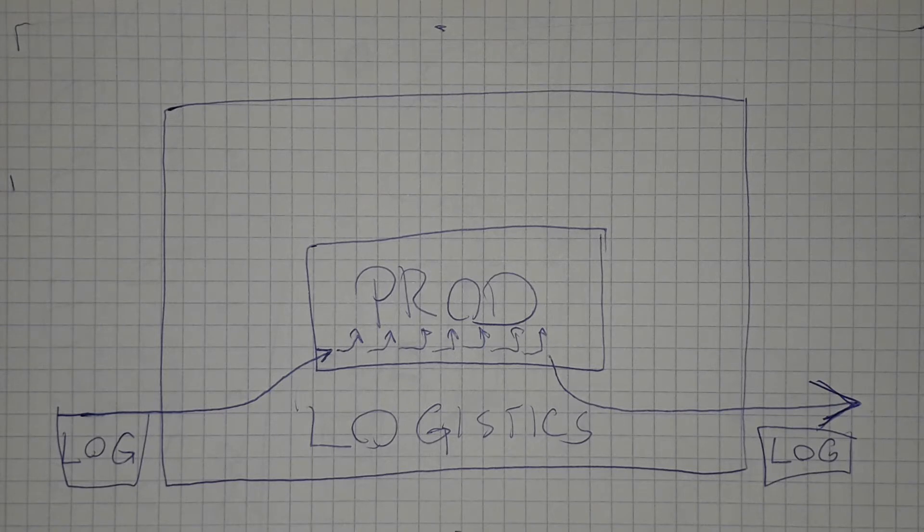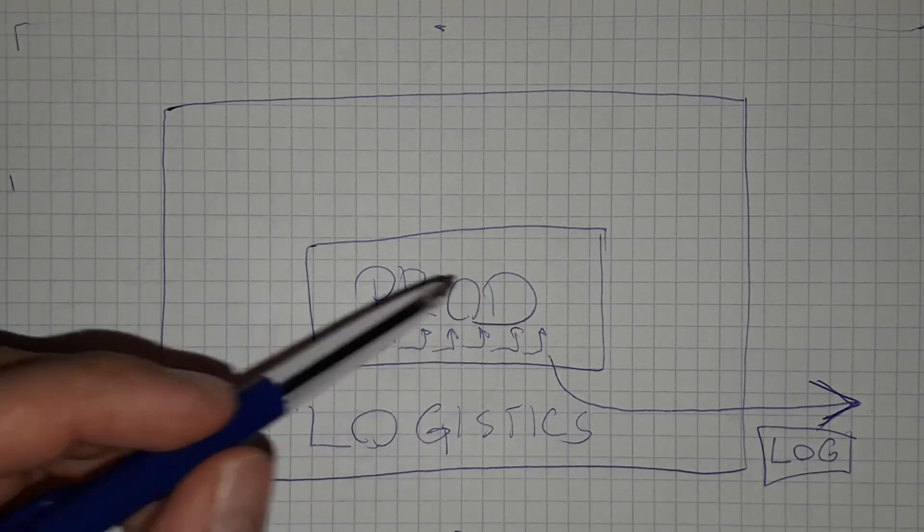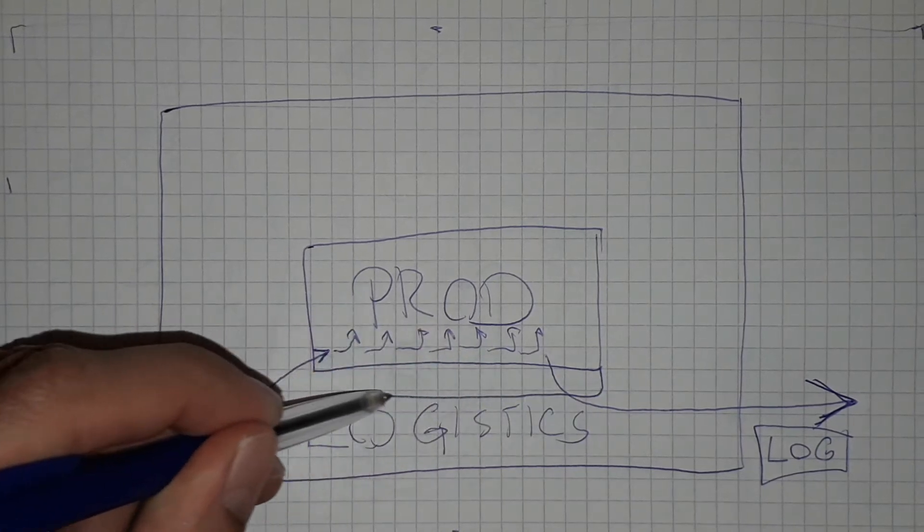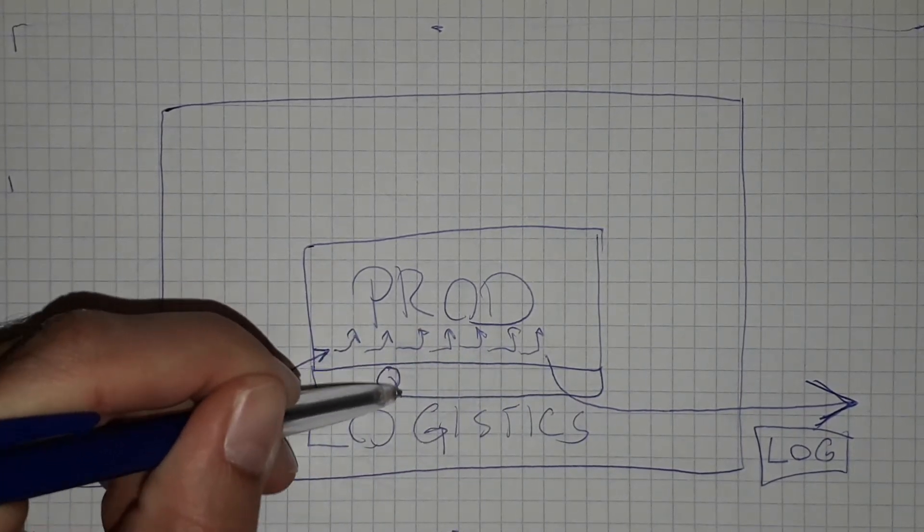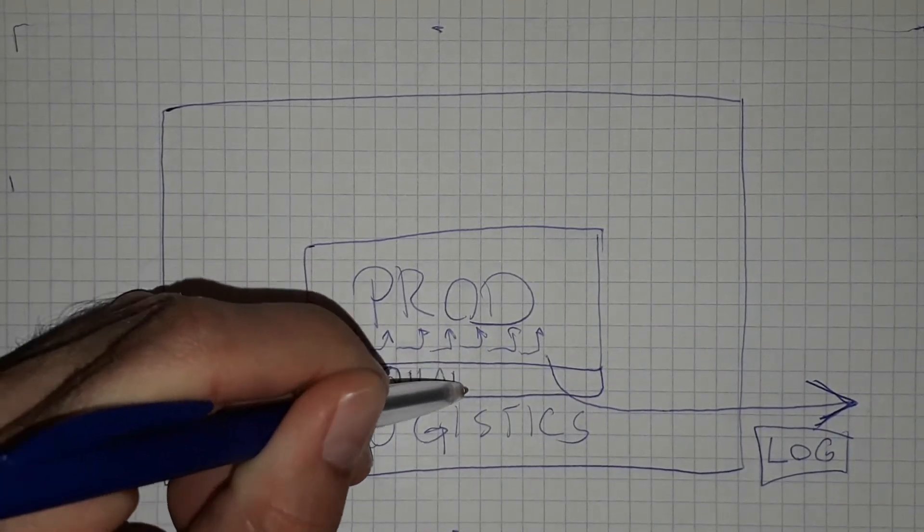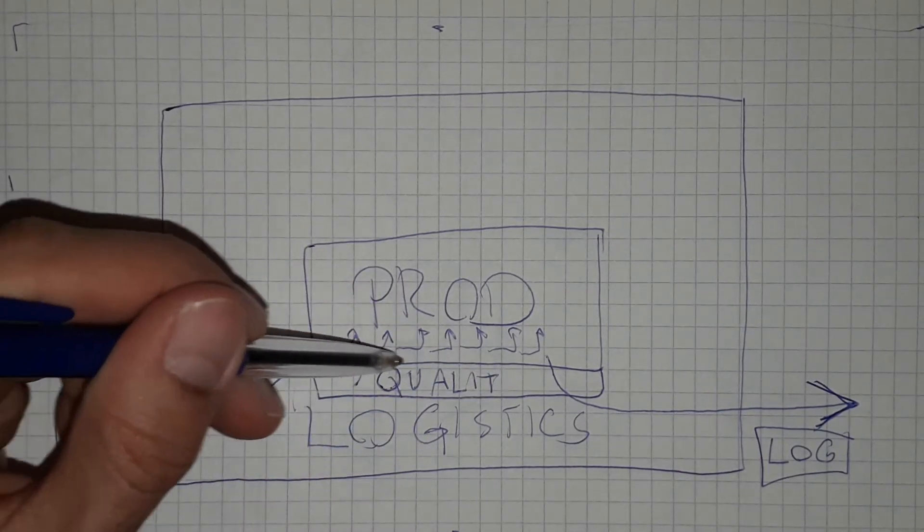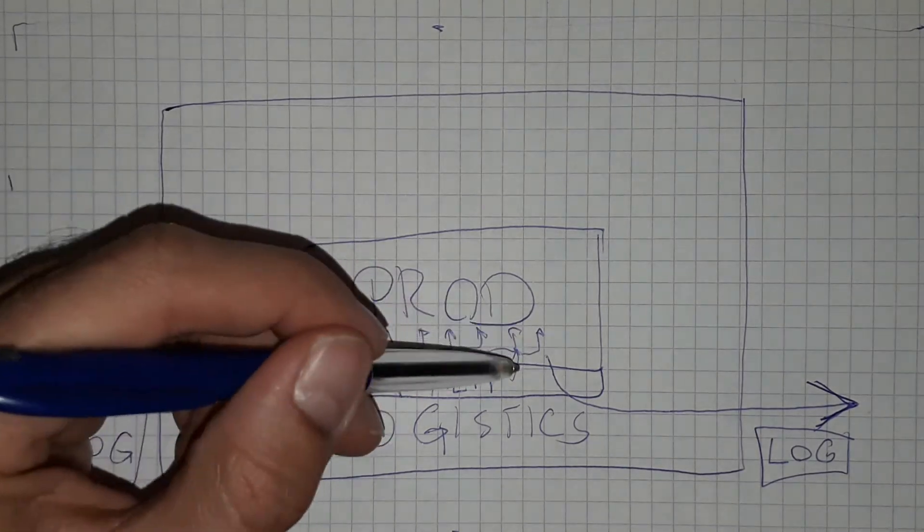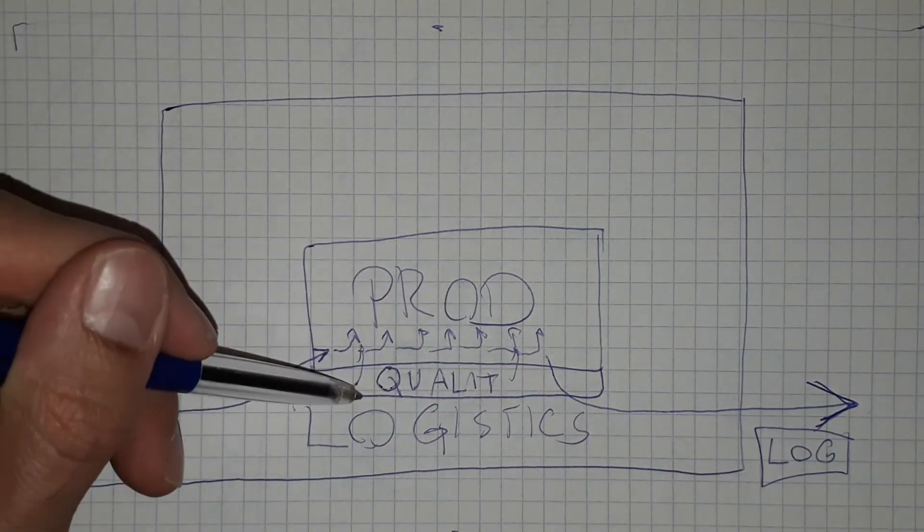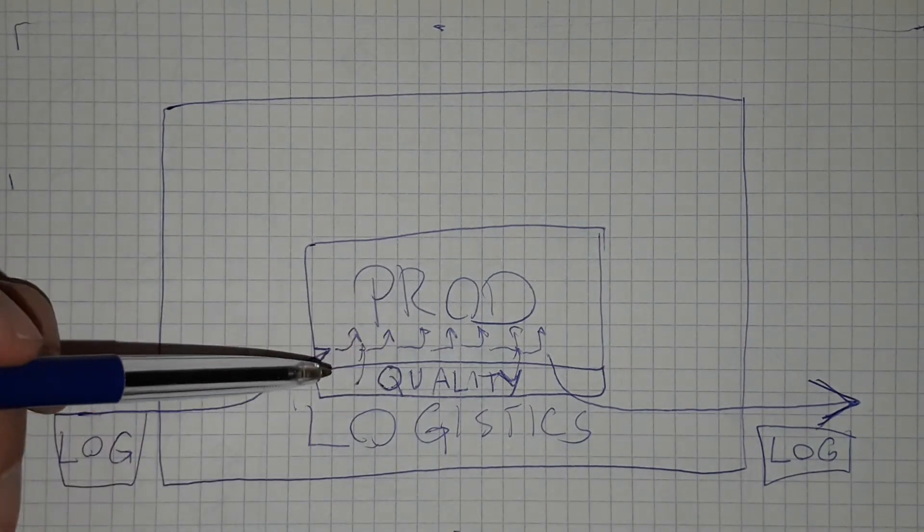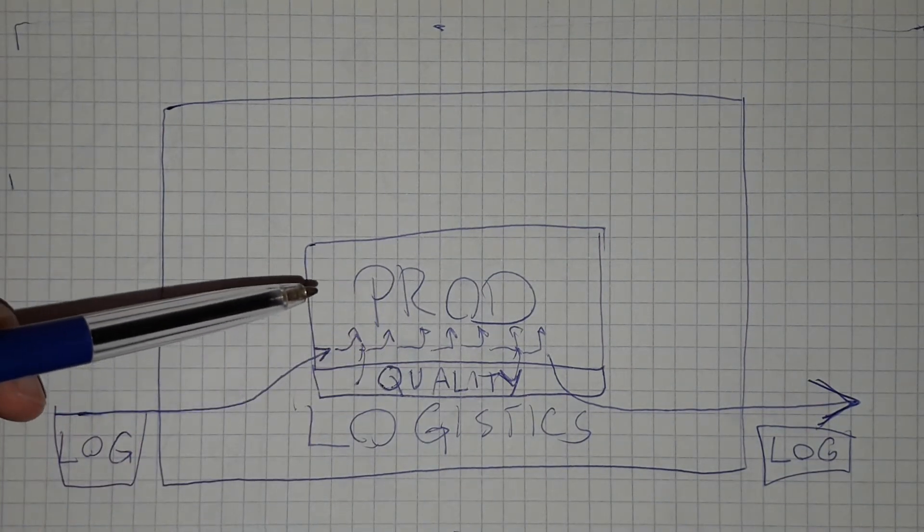Then we have as well of course the quality. Quality is the department which is stuck to the production because quality needs to check if the production is working correctly. The quality department is making all the statistical production control.